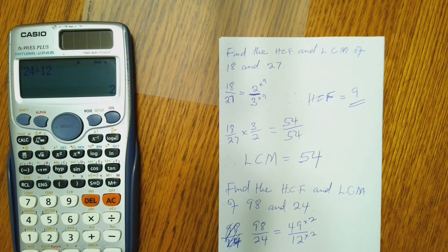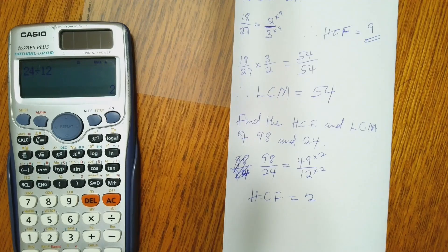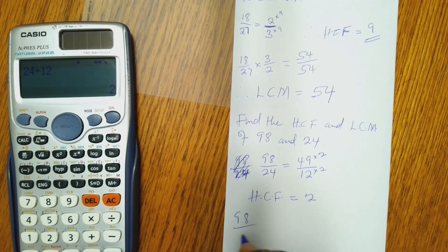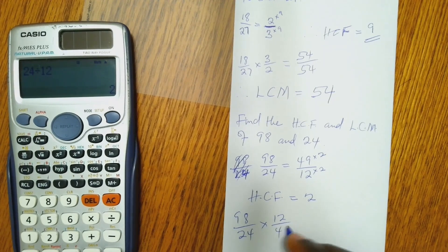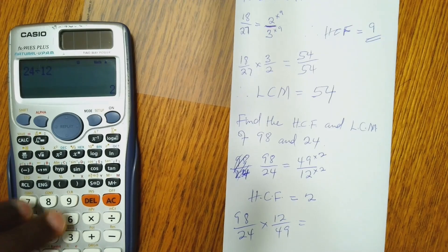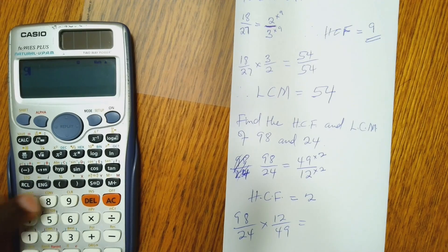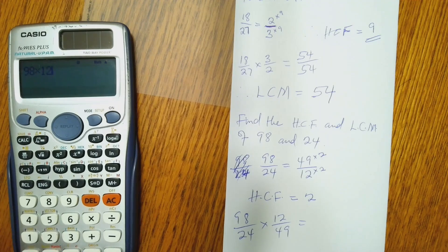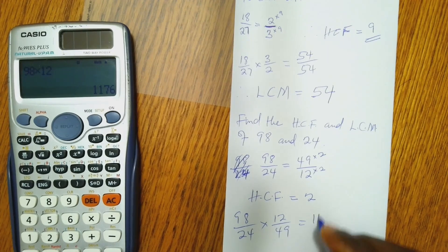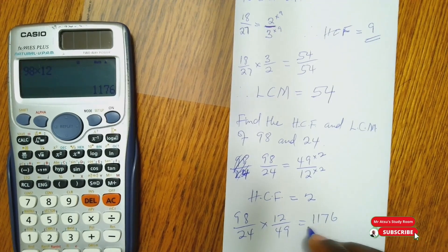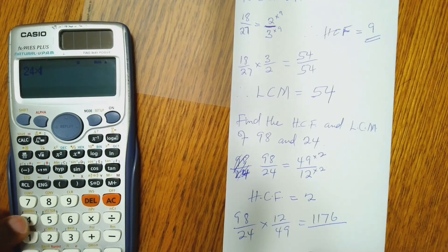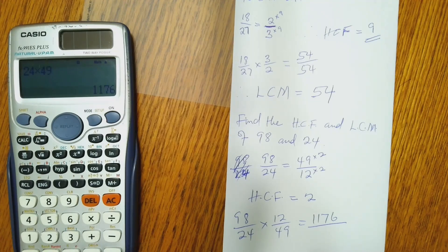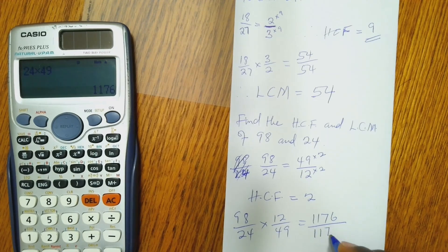Then now we go on to get the LCM. And to get the LCM, we flip the 49 and 12 to get 98 over 24 times 12 over 49. So we do 98 times 12. And that gives 1176 over 24 times 49, which is 1176.